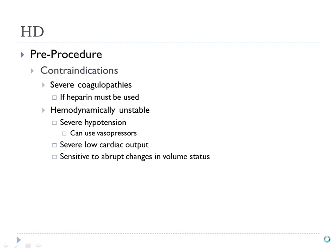Contraindications to hemodialysis: if the patient has a bleeding problem, they're at even greater risk for bleeding during the procedure because heparin is often used in the machine to prevent clotting as blood passes through the tubing. Some heparin does get to the patient, increasing their risk for bleeding. Severe coagulopathy is a contraindication for hemodialysis.